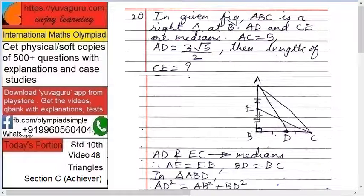D is the midpoint of BC and E is the midpoint of AB. AC equals 5. AD equals 3 root 5 upon 2. Find the length of CE.